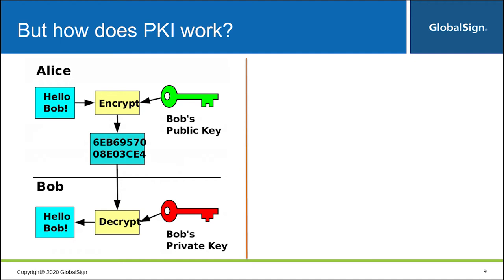A bit more insight on how PKI actually works — this specific use case is for encryption, as that's the easiest way to explain it without diving too deep into technical details. In this example, Alice wants to share confidential information with Bob. First, Bob will need a digital certificate, which can be purchased through a Certificate Authority like GlobalSign. Once Bob has a certificate, it will consist of a private and a public key. It's important that Bob keeps the private key private under his sole possession, and distributes the public key to whoever he wants to have encrypted communication with.